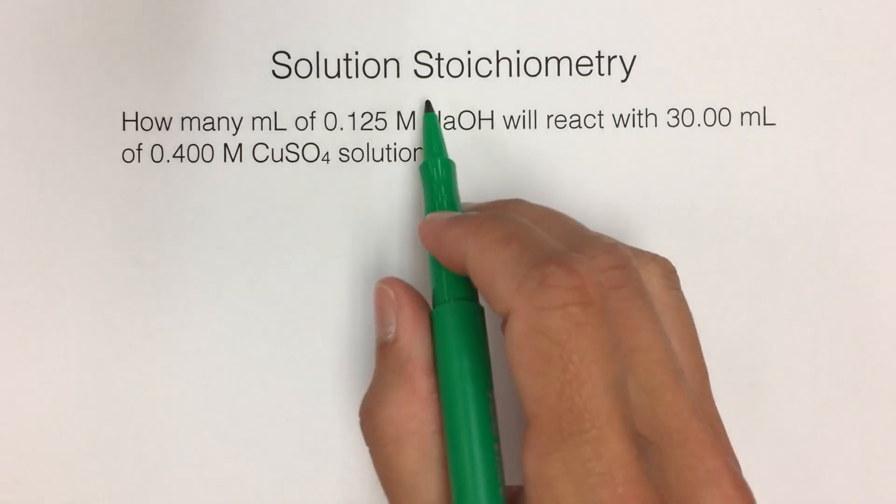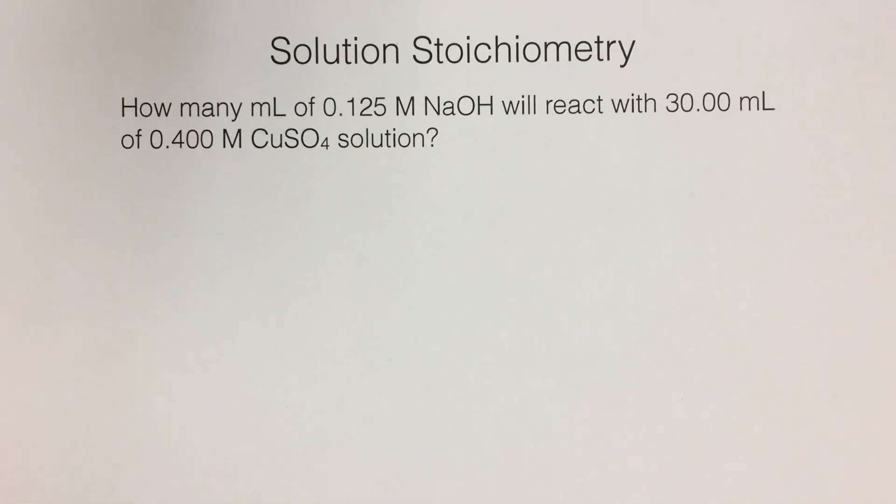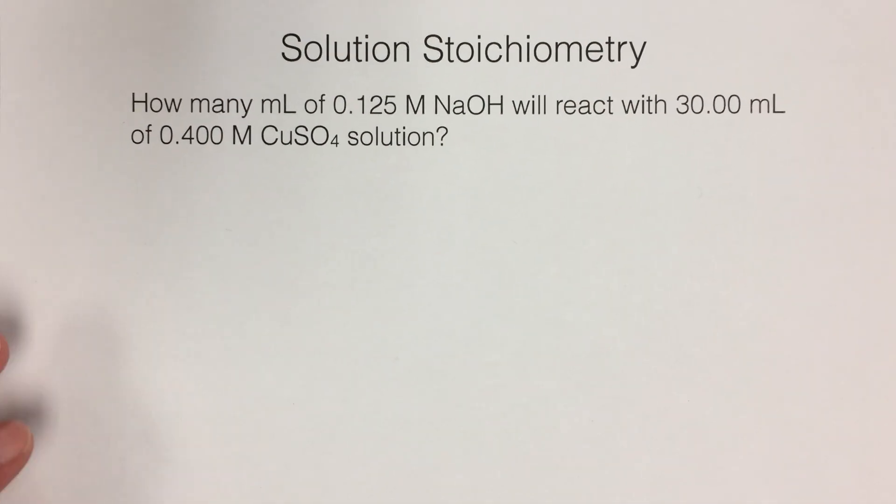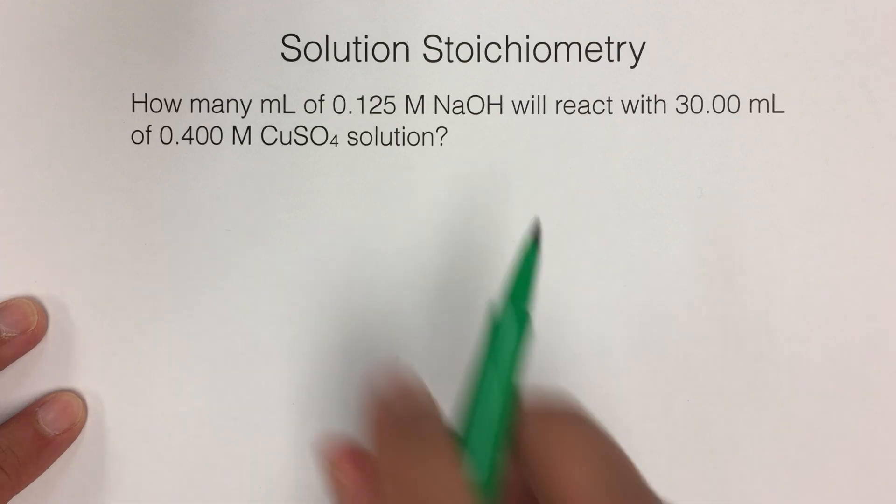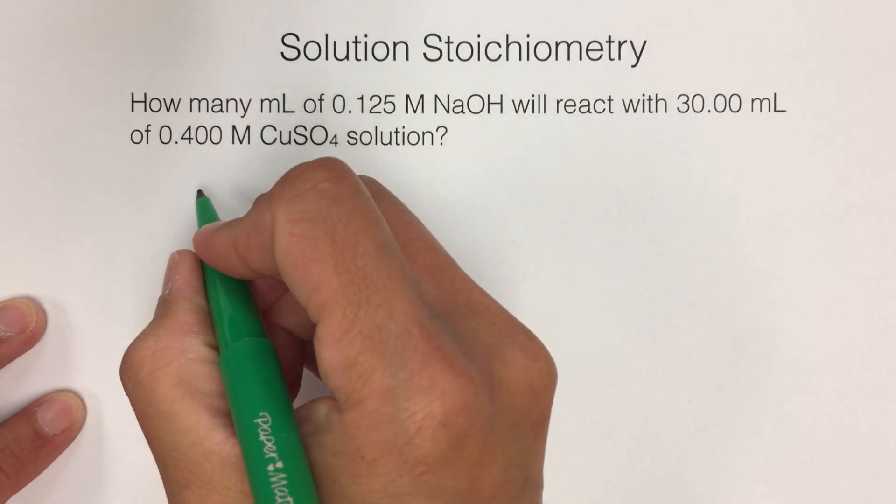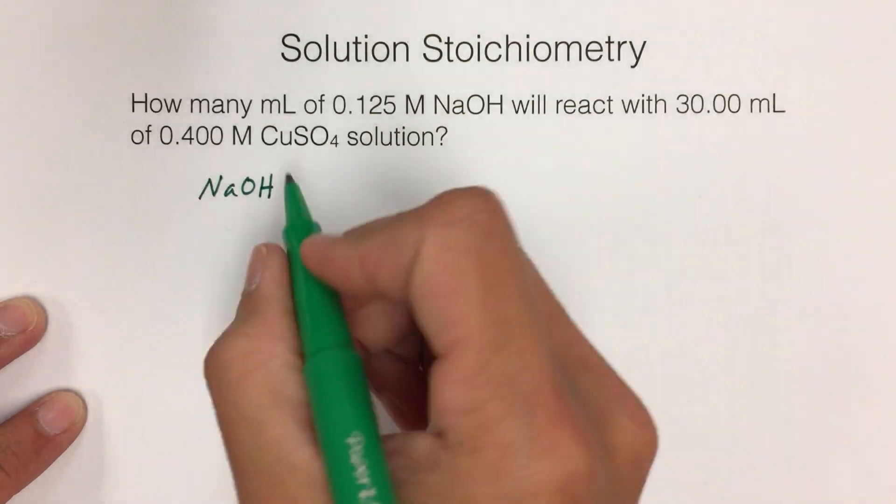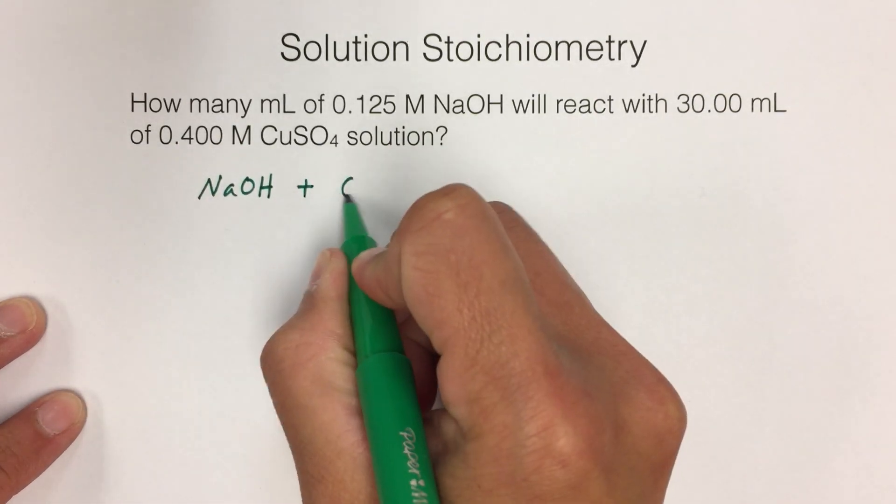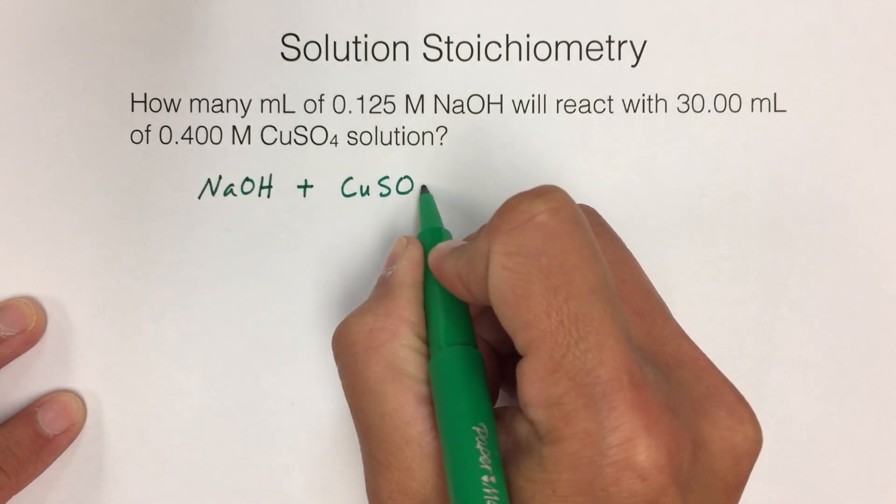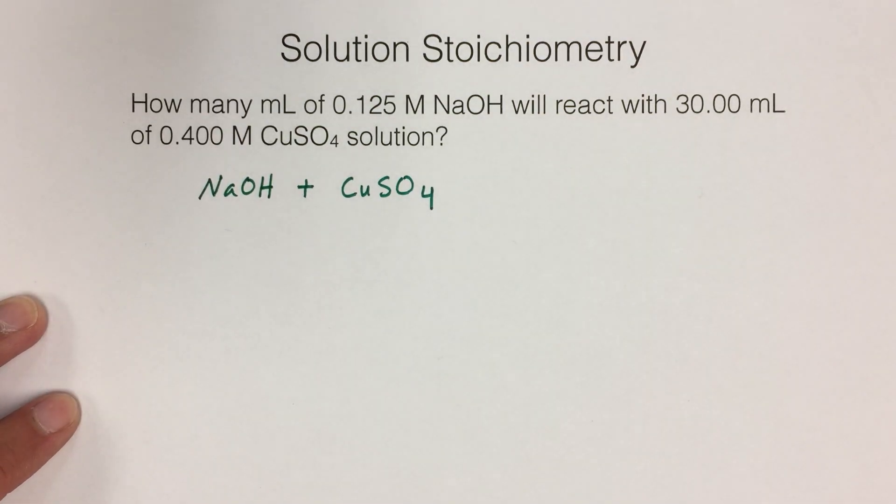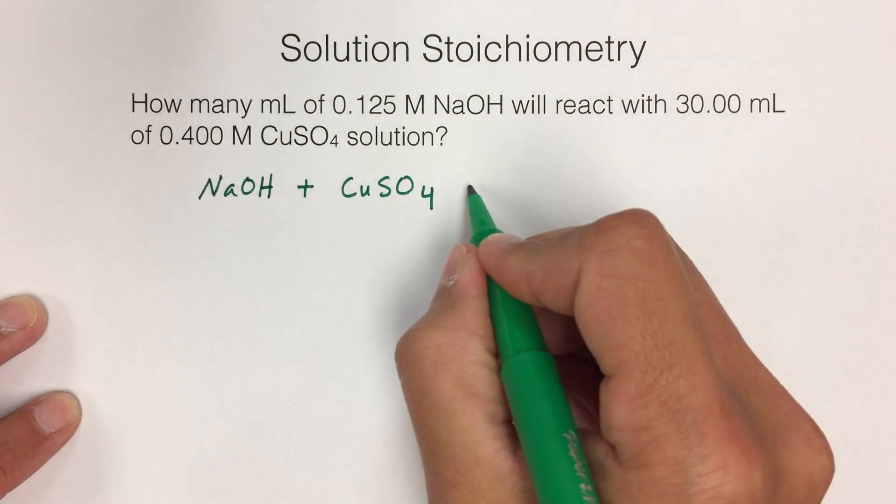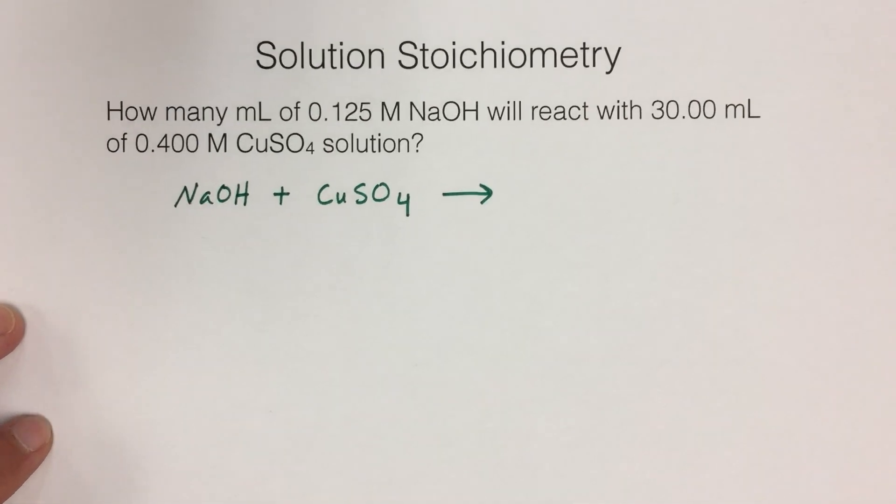Since it is stoichiometry, we know that the first thing we're going to need is a balanced chemical equation. So we have sodium hydroxide reacting with copper 2 sulfate. We don't care about phases, that's okay. But when we look at this, what type of reaction is it?